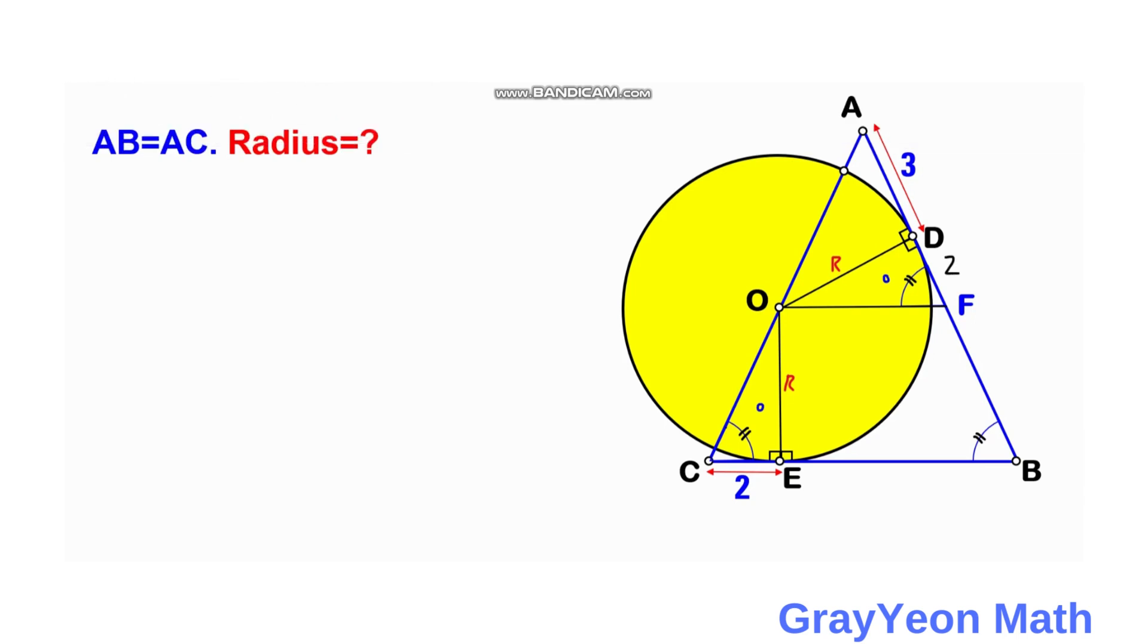Notice that this transversal AC also cuts these two parallel segments OF and CB. Since these two OF and CB are parallel, then this angle at O is congruent with the angle at C.